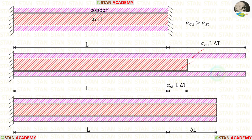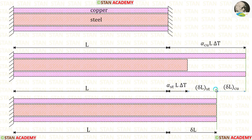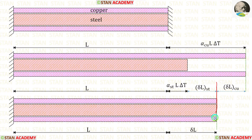Both materials will take an intermediate position. To come to this intermediate position, copper has to compress by delta L_Cu, so in copper there will be compressive stress. To come to this intermediate position, steel has to expand by delta L_ST, so in steel there will be tensile stress.